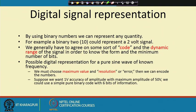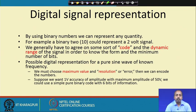By using binary numbers we can represent any quantity. We will see in our course that different number systems are possible, and in a computer system the number system that is used is the binary number system, where the individual digits are only 1s and 0s. We can represent two different states of some signal by means of these two different notations: 0 and 1.